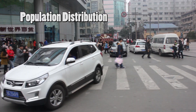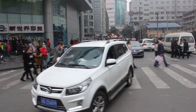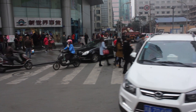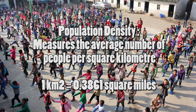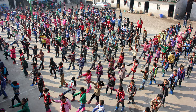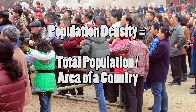Population distribution refers to how a population is distributed unevenly around the globe. Because of this uneven distribution, different regions and countries have differing population densities. Population density measures the average number of people per square kilometer, and can be calculated by dividing the population by the area of that country.